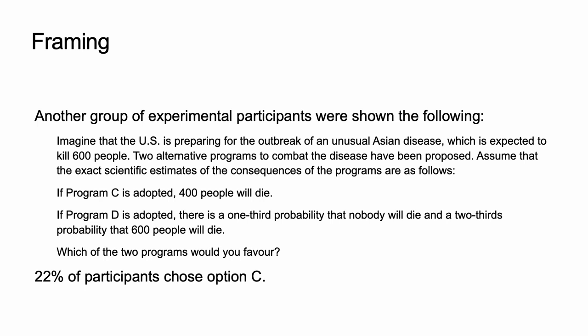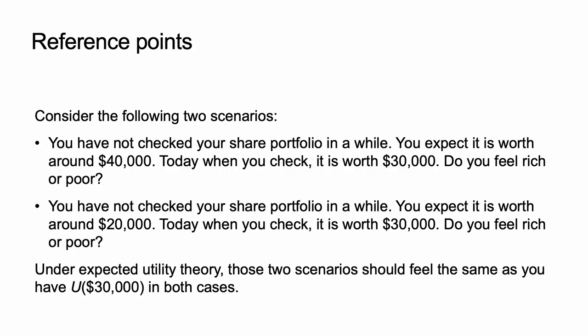72% of participants chose A and 22% of participants chose option C. Yet these two options are equivalent. The only difference is the framing of the options, which under expected utility theory should not matter.